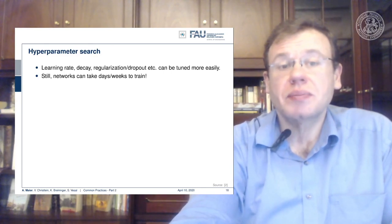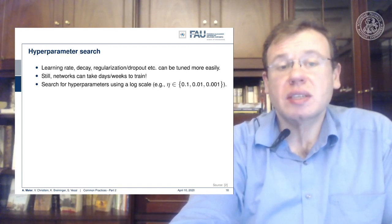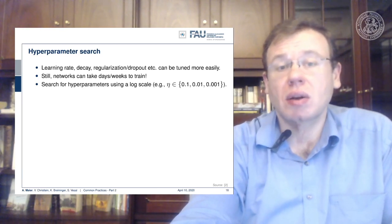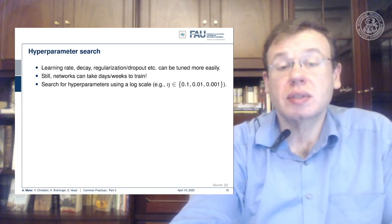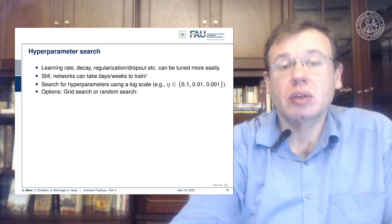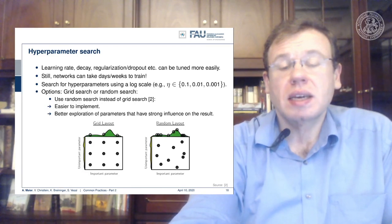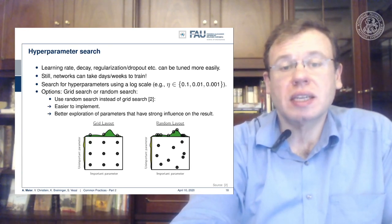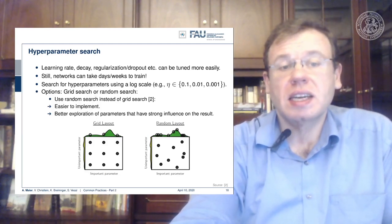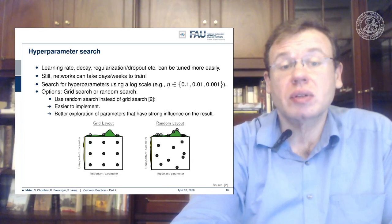These hyperparameters have to be tuned, but networks can take days or weeks to train. We recommend using a log scale — for example, for the learning rate you go through 0.1, 0.01, 0.001. You may want to consider grid search or random search. In grid search you would use equal-distance steps. As shown in reference 2, random search has real advantages over grid search: it's easier to implement and has better exploration of parameters that have a strong influence on the result.